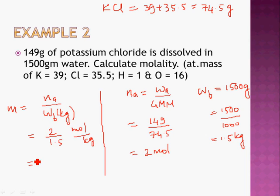This finishes the topic of concentration units. There are other concentration units like parts per million, parts per billion, and normality, but we are not going into them right now. We are focused on the Grade 11 CBSE syllabus. Normality will be studied later in the topic of redox reactions, and other units will be introduced as they come up in relevant topics.